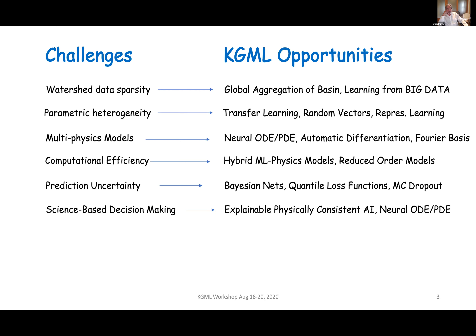Science-based decision making: realizing that social needs require evidence, and the evidence almost always comes back to science. Can we develop KGML opportunities for explainable, physically consistent AI? Neural ODEs, PDEs, and conservation laws are very much in that vein. Hybrid machine learning with physical models and reduced order models would also come into play there.